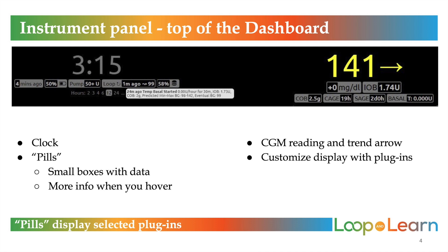Below, these pills give lots of information. The zero mg/dL tells us the glucose change from the last CGM cycle. The IOB displays the current amount of insulin on board. COB is carbs on board. CAGE and SAGE are user-inputted data that you can enter into NightScout to track if you like. CAGE is the cannula age and SAGE is sensor age. This can be very helpful for caregivers. Finally, the basal pill shows the current basal rate that is running. These data boxes are customizable and can be turned on or off through the NightScout settings page.